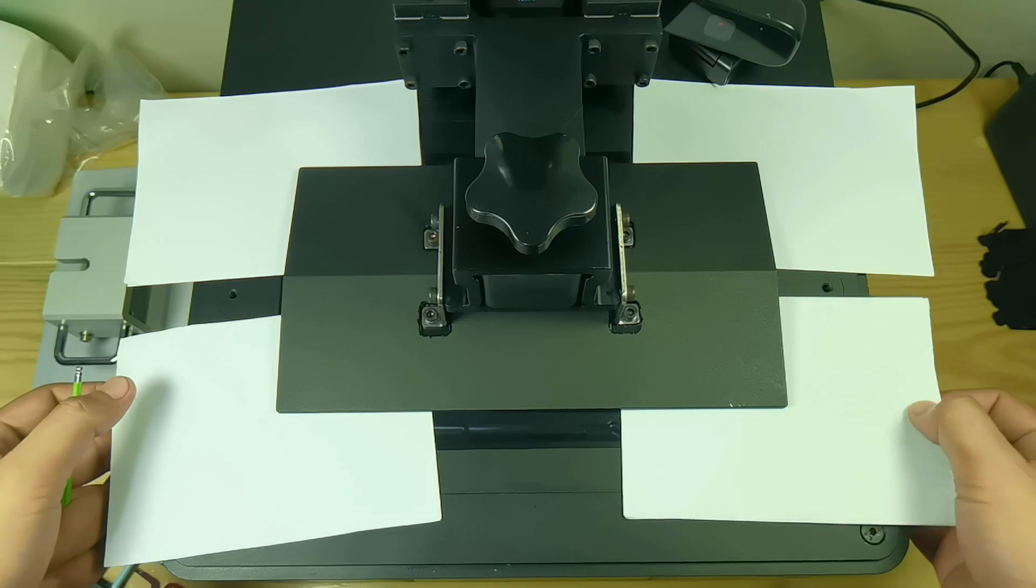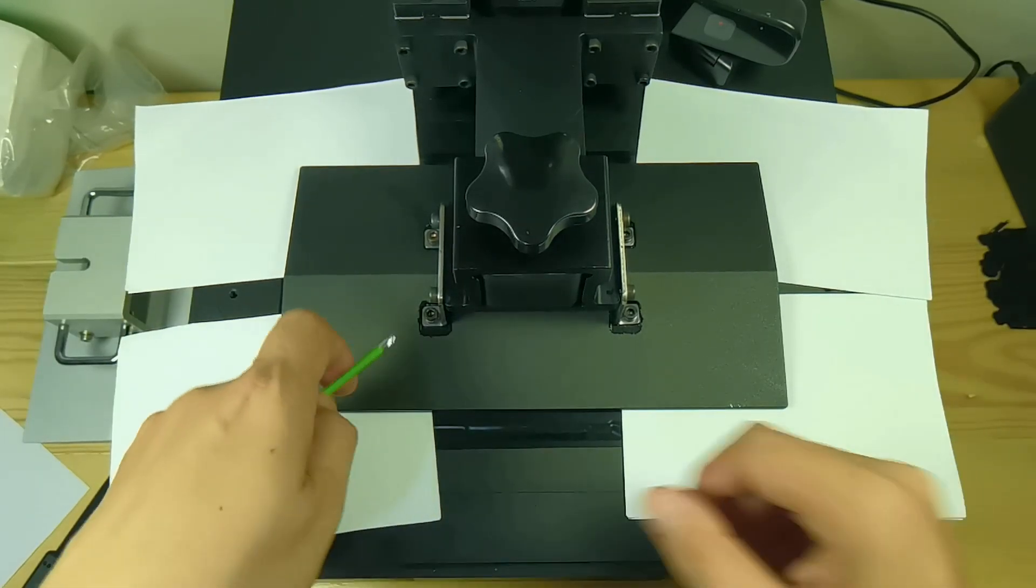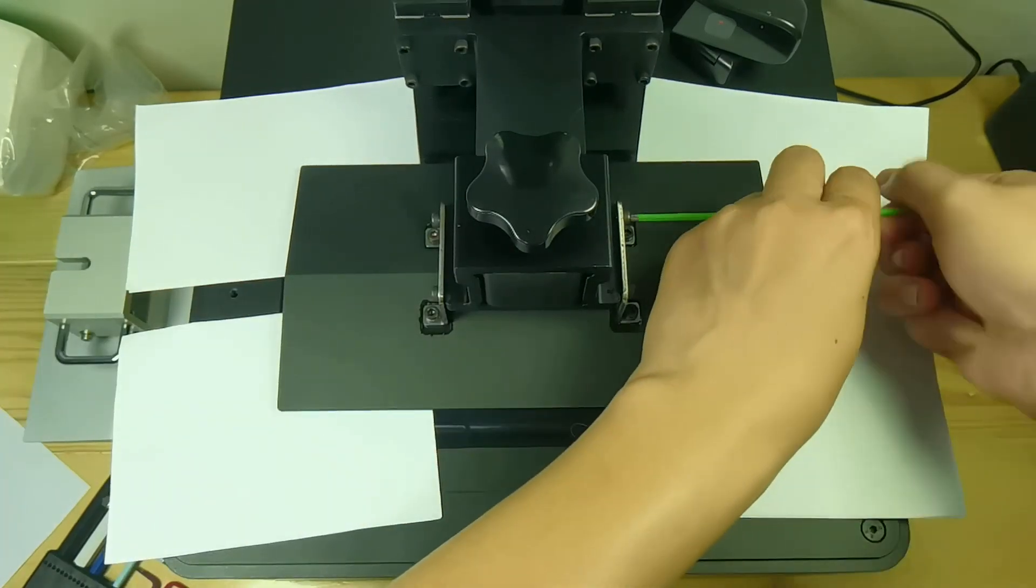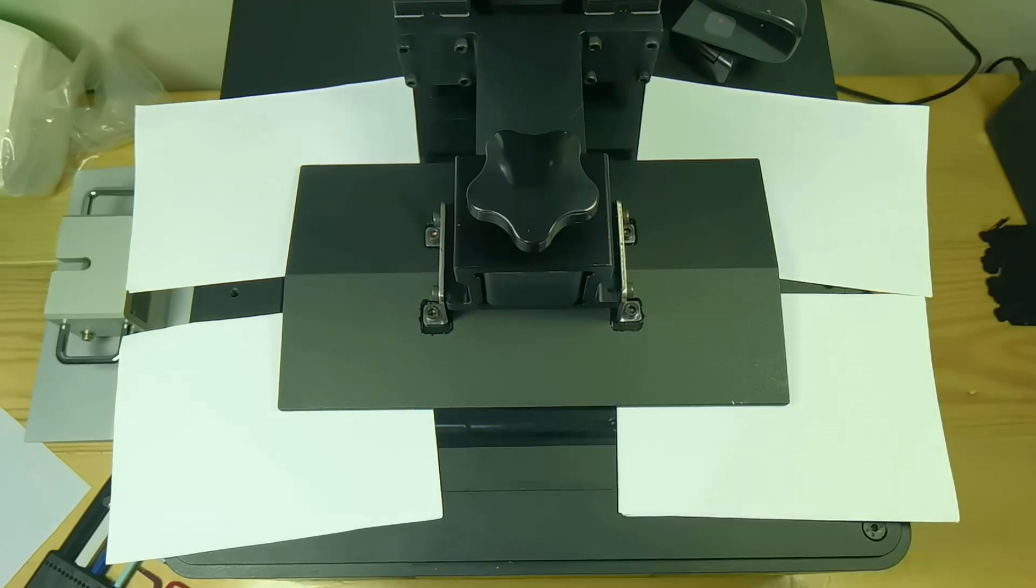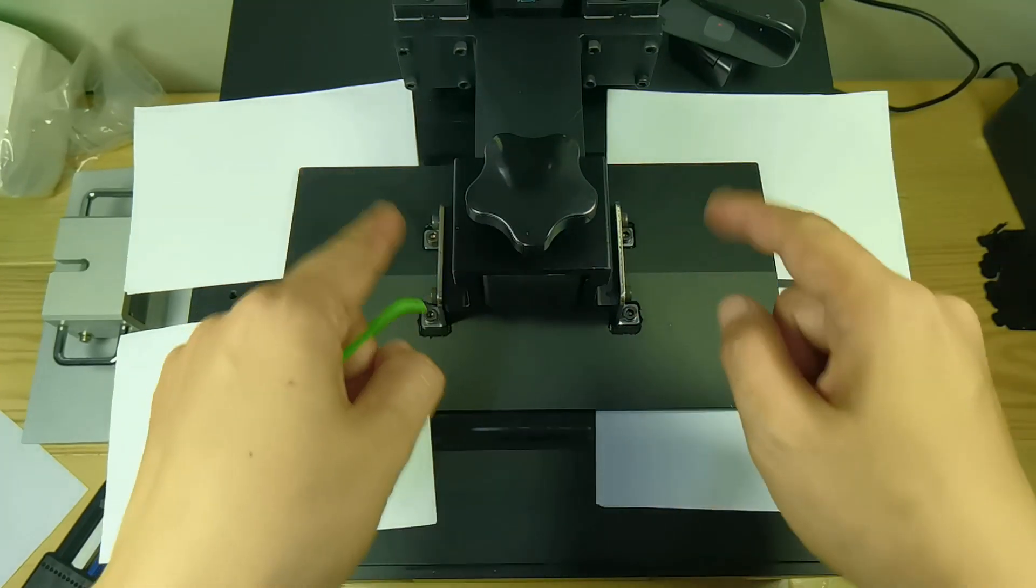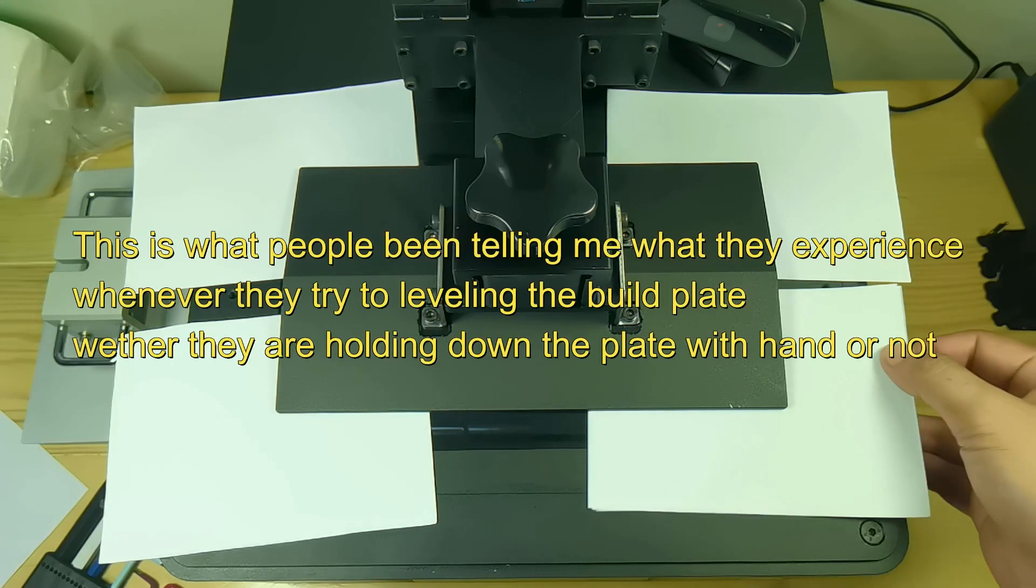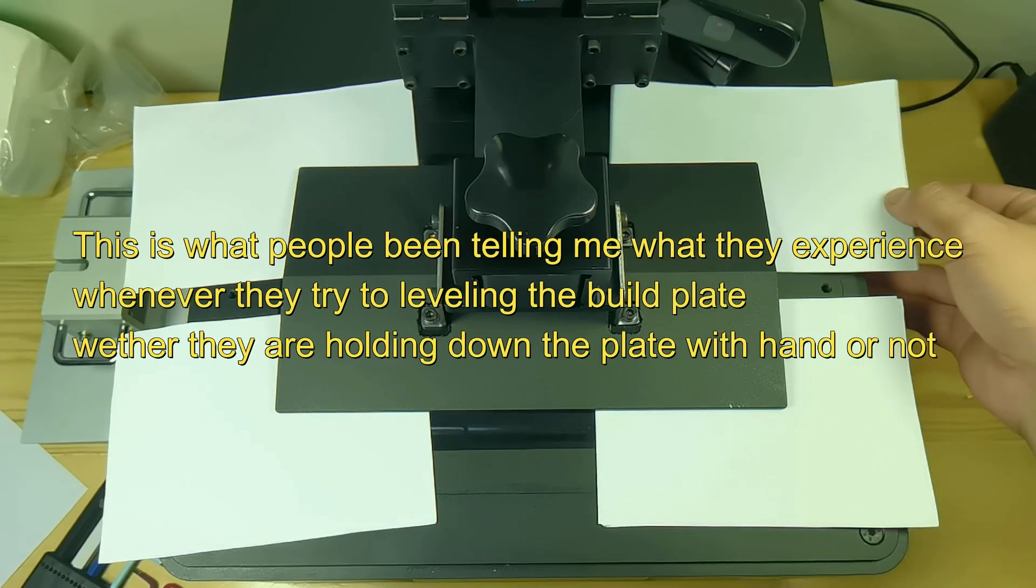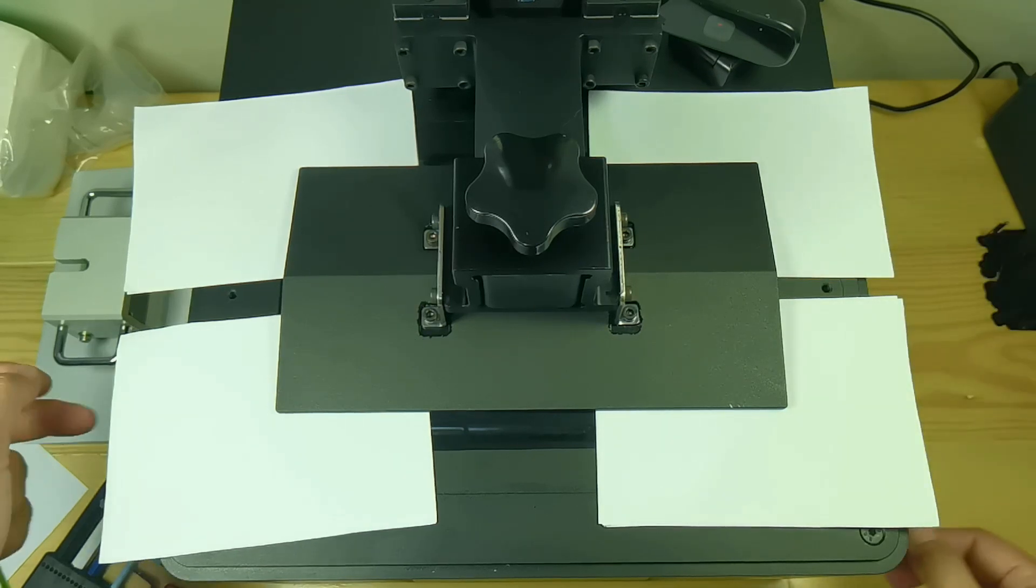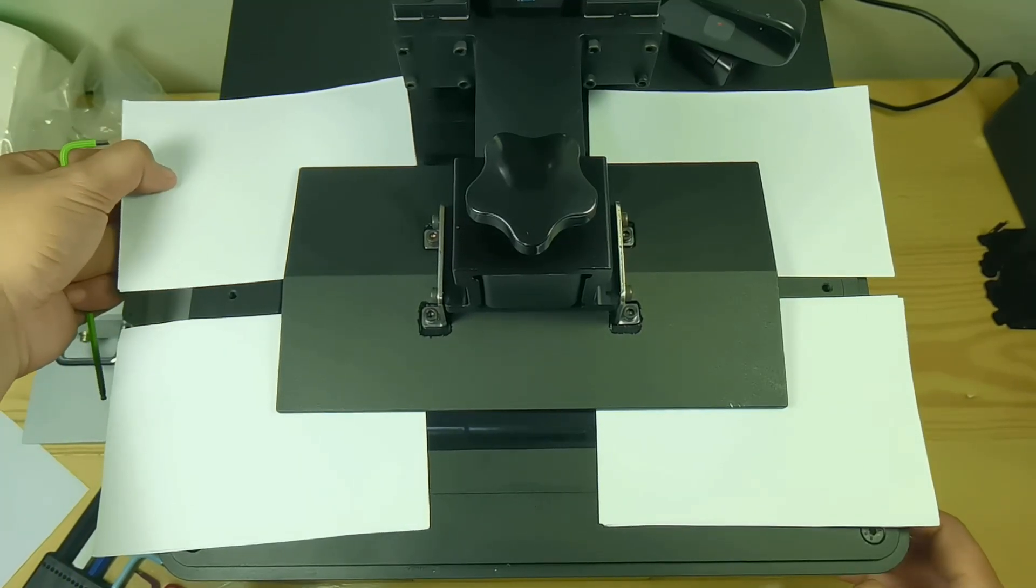Now I do not fully tighten the screw yet, but the paper here becomes very loose with no friction—very loose and no friction. And over here it becomes very tight and I can barely pull the paper.